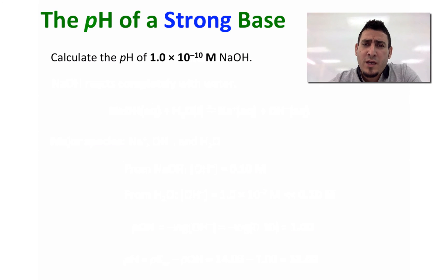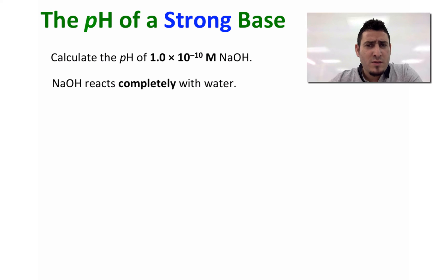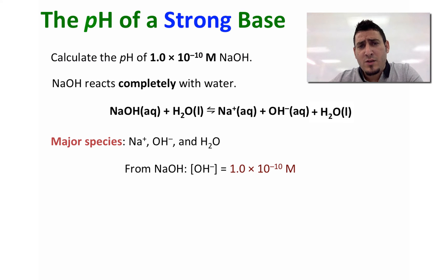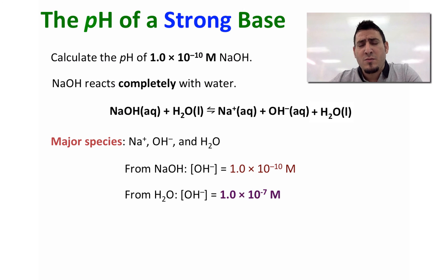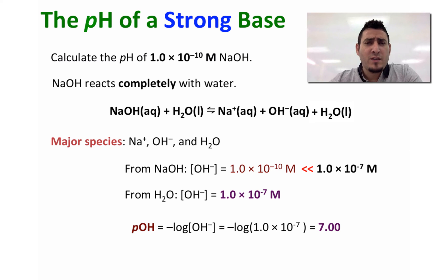Let's consider another example: calculating the pH of a strong base at low concentration — specifically, 1.0×10⁻¹⁰ molar NaOH. NaOH will completely dissociate in water. The concentration of OH⁻ coming from NaOH is 1.0×10⁻¹⁰ molar. However, the concentration of OH⁻ from water is 1.0×10⁻⁷ molar — way higher — so the OH⁻ from NaOH is neglected. The pOH is therefore equal to 7.